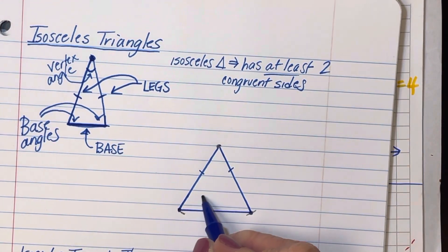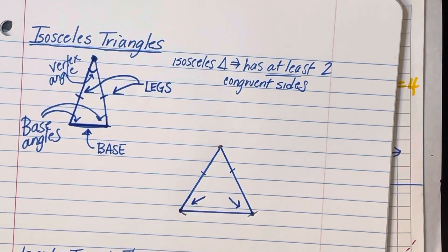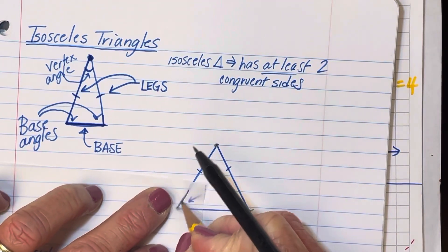And what I want to explore is the measure of these two base angles in my isosceles triangle. So I'm just going to use a piece of tracing paper quickly.